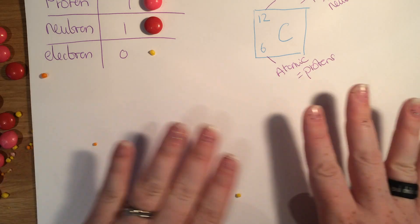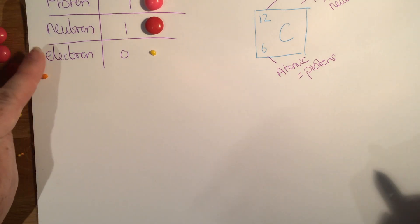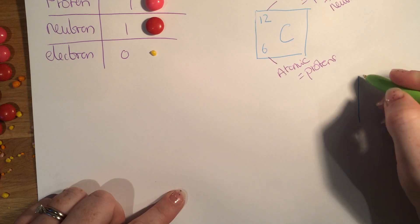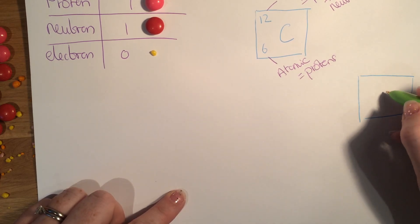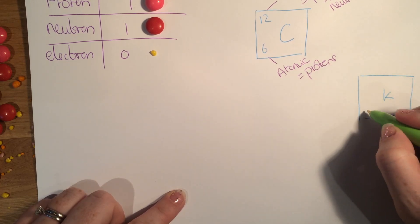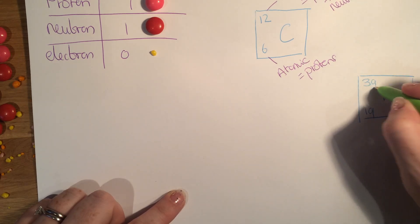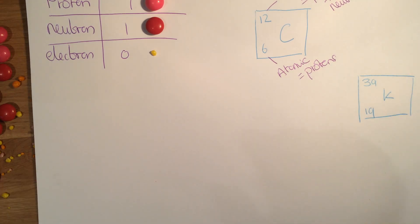If I just take all of those away and then we look at a different example. So let's look at potassium. It has an atomic number of 19 and it has a mass number of 39.